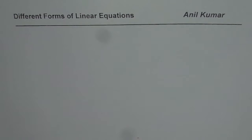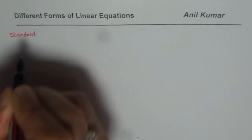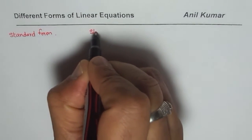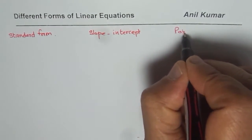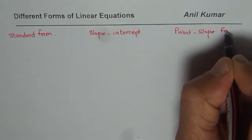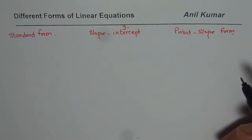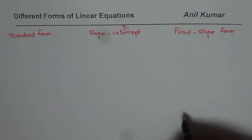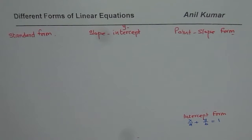I am Anil Kumar and in this video we will consider different forms of linear equations. One of them is called standard form, one is slope-intercept form, and one is point-slope form — this is slope and y-intercept. We also have another form called intercept form, which we will discuss in the next video. It is written as x over a plus y over b equals 1, where a and b are the x and y intercepts.